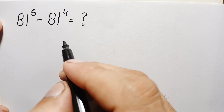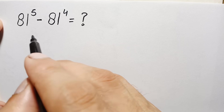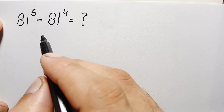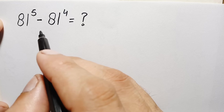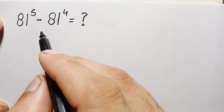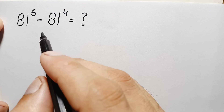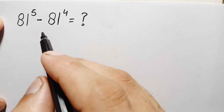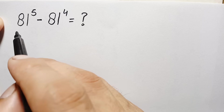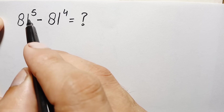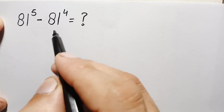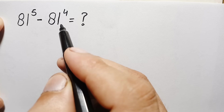Hello everyone, welcome. How to solve and find the value of this beautiful exponential math problem without any calculator and without any standard multiplication — which is 81 to the power 5 minus 81 to the power 4.